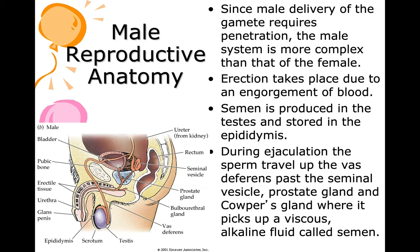The reason the vaginal tract is acidic is to protect against bacteria — the more acidic it is, the less likely bacteria can grow, protecting the female reproductive area. If the female didn't have an acidic reproductive area, humans would have died out long ago due to mass infections.